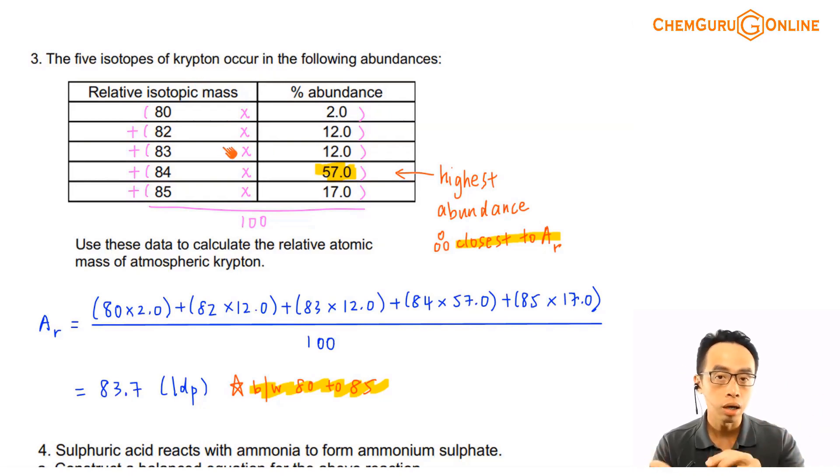So if I go and count how many of these Krypton is Krypton-80, how many of them is Krypton-82, how many of them is 83, and how many of them is 84 and 85, then this is the percentages that I'll get.